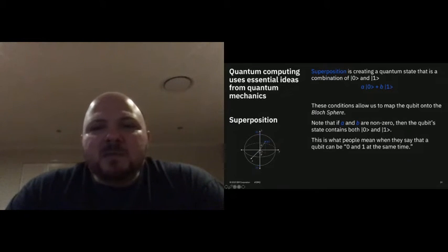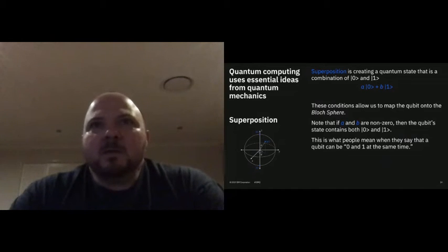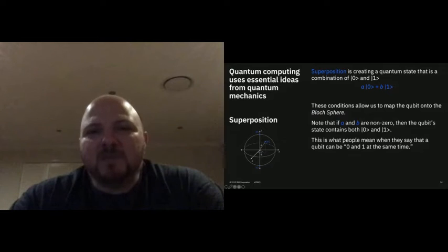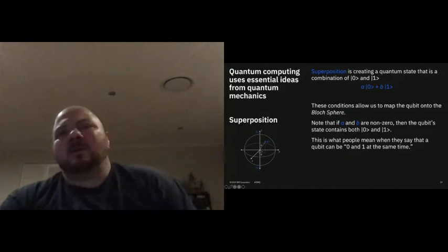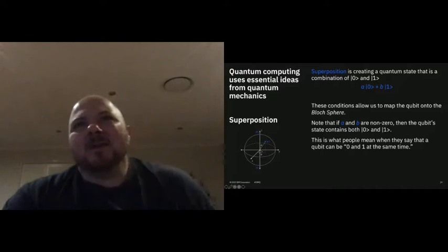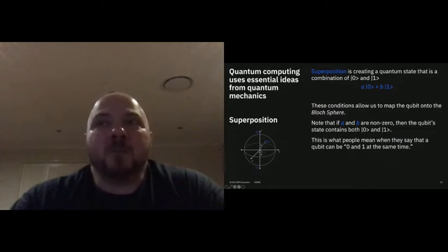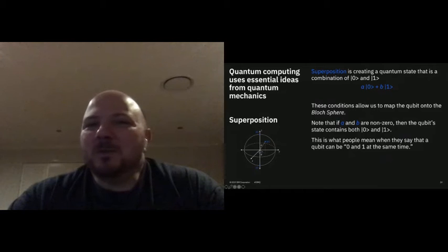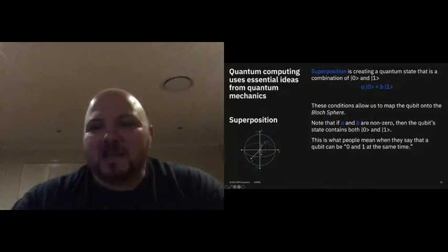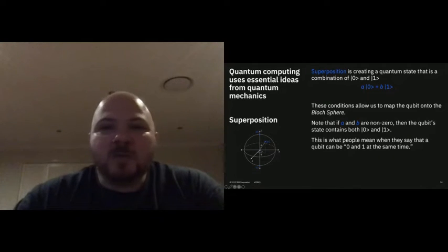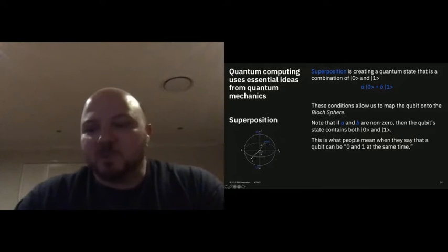Think about AM radio where we encode the sound into the amplitude of the signal. We can actually be encoding information into the amplitudes of these coefficients. The idea of superposition is it's in both states at the same time, and depending on how you influence the amplitudes, you can affect which one's more likely to come up when measured.